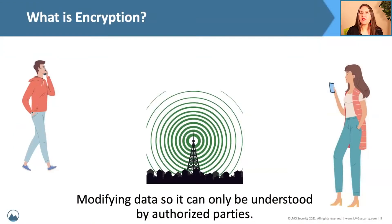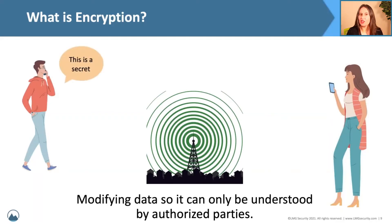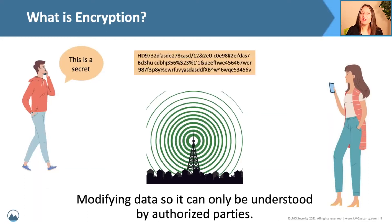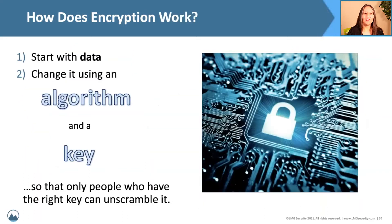Encryption is the process of modifying information so it can only be understood by authorized parties. On the left I have Sam here — Sam wants to send a message to Alice. This is a secret, and we're going to use encryption to scramble it so that nobody but Sam and Alice can read it. Then Alice will decrypt the message and recover the initial secret.